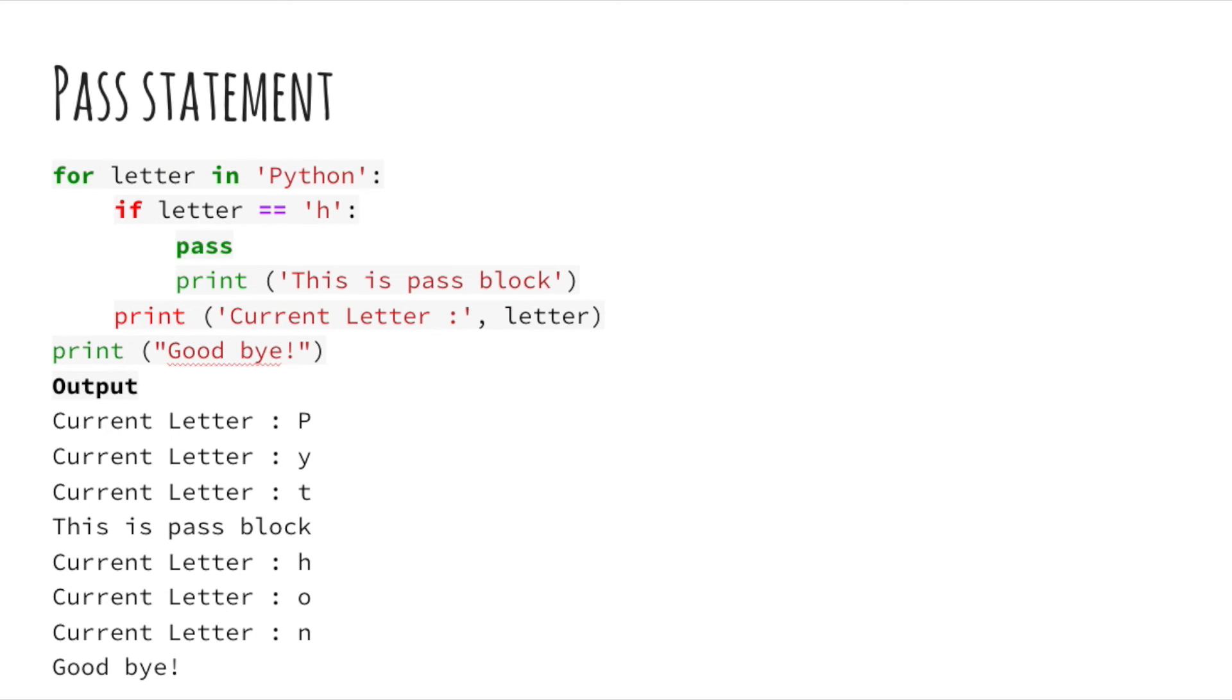Congrats! One last step before you become a control flow master. The last topic is the pass statement. The pass statement does nothing. It's used when a statement is required syntactically. The pass statement is also useful in places when your code will go there eventually, but it hasn't been written yet. Above, you can see how the pass statement functions in a for loop.